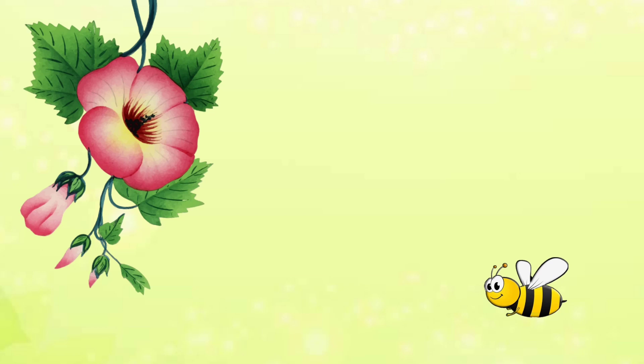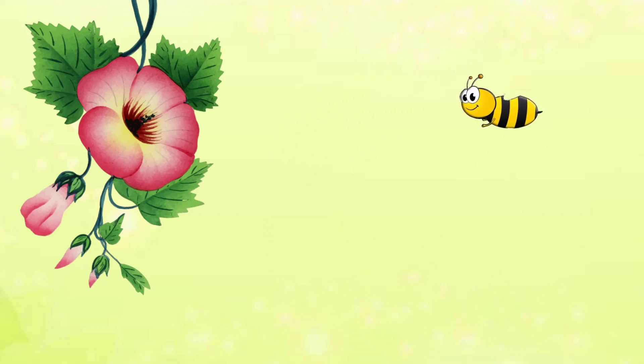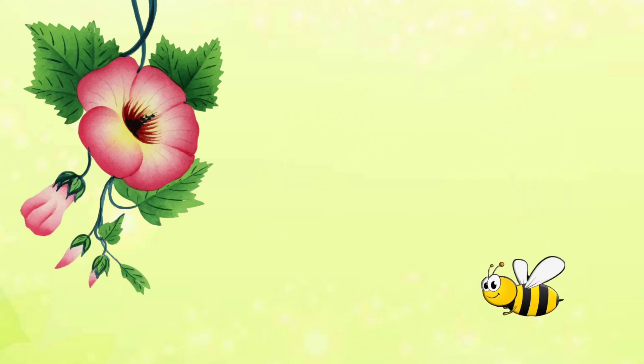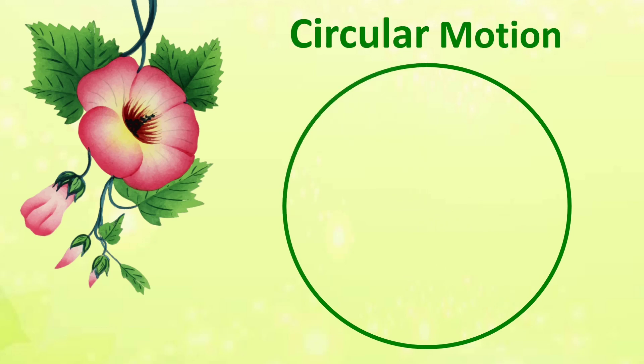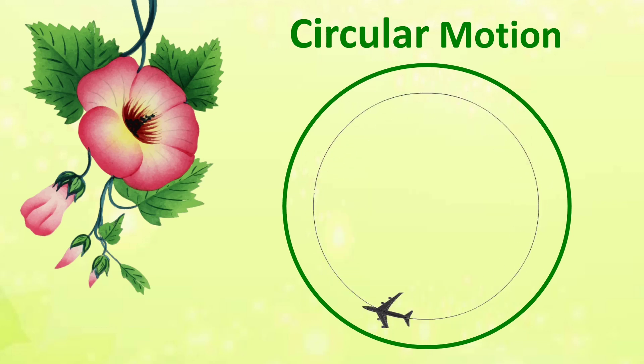Now tell how the bee is moving to reach the flower. It's moving in a circle. This type is known as circular motion. See an example — the aeroplane is moving in circular motion.